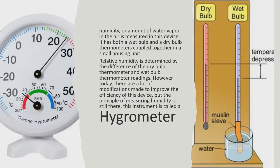Humidity or amount of water vapor in the air is measured with this device. It has both a wet bulb and a dry bulb thermometer coupled together in a small housing unit. Relative humidity is determined by the difference between the dry bulb thermometer and wet bulb thermometer readings.